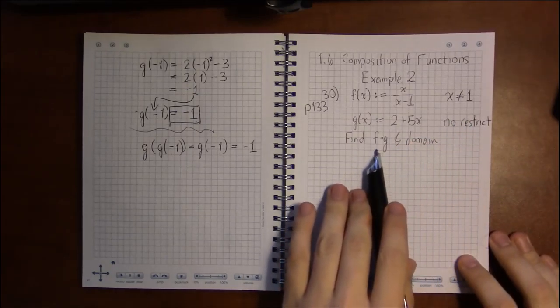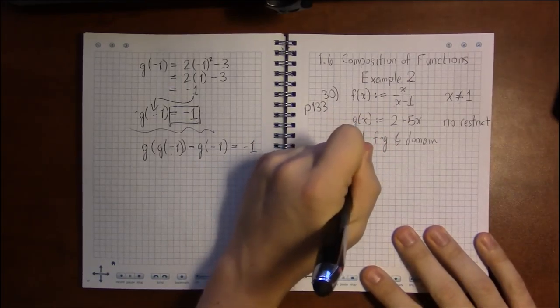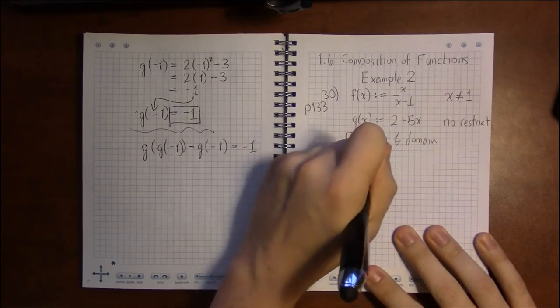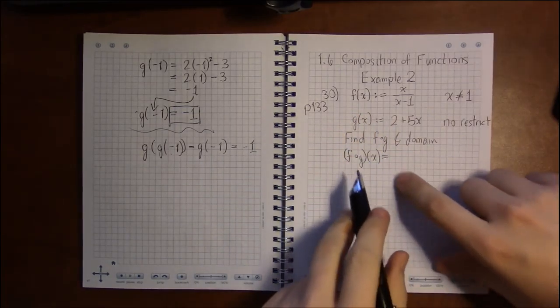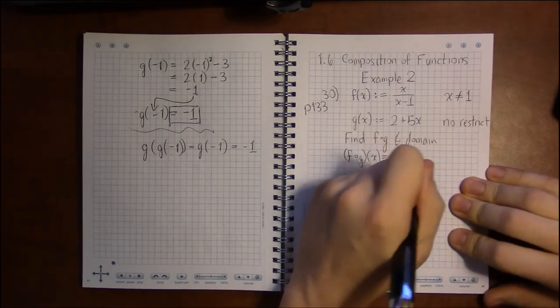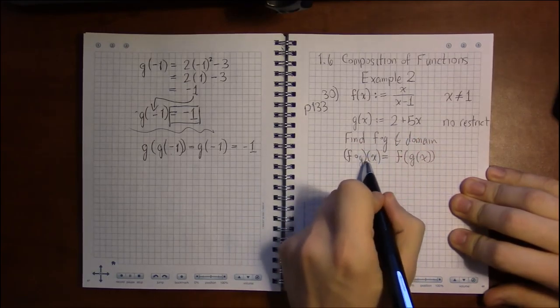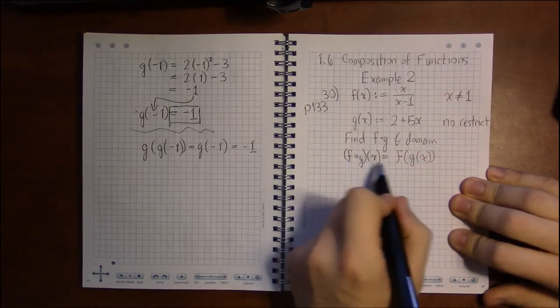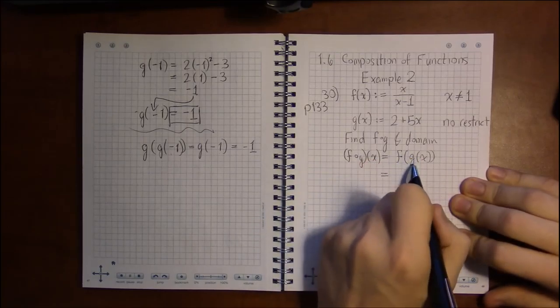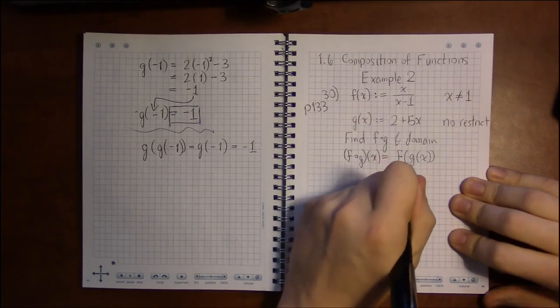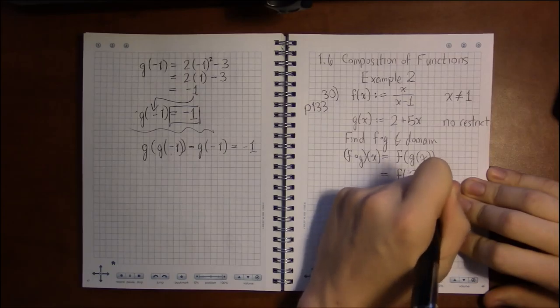But to find f of g, we just need a definition of f and g. We can merely evaluate this by looking at it as f of g of x. First x goes into g, then the result of g goes into f. So what is g of x? Well, g of x is 2 plus 5x.